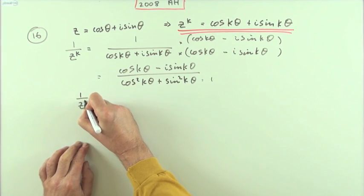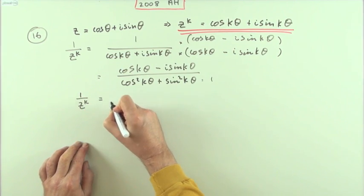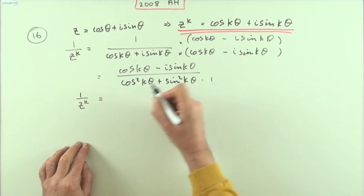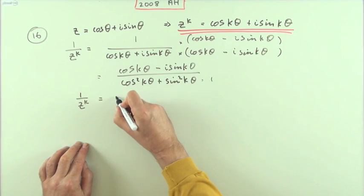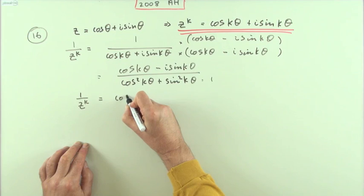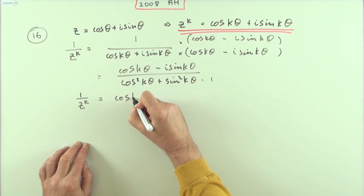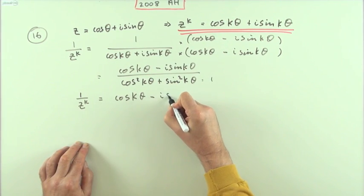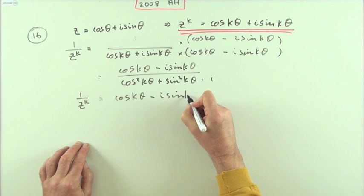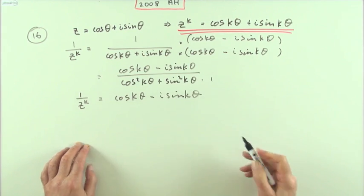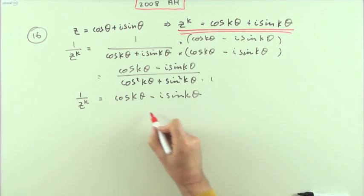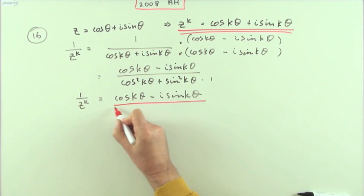Since i·i is negative 1, subtracting gives plus 1, so the denominator equals 1. That means 1 over z to the k is simply the complex conjugate cos(kθ) - i·sin(kθ). There are the first three marks.